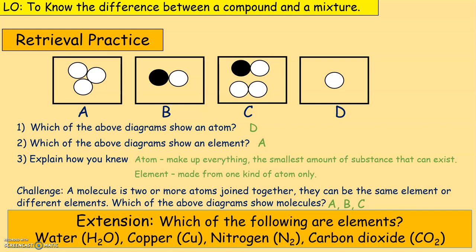An element is made up of one kind of atom only. B shows two different types of atom — represented by the black and white. C also shows two different types. But A shows only one type of atom — there are three atoms of it, but it's still one type, so it's an element. The challenge question: a molecule is two or more atoms joined together — same or different elements. Which diagram shows a molecule? The answer is A, B, and C, since they are made up of two or more atoms joined together.